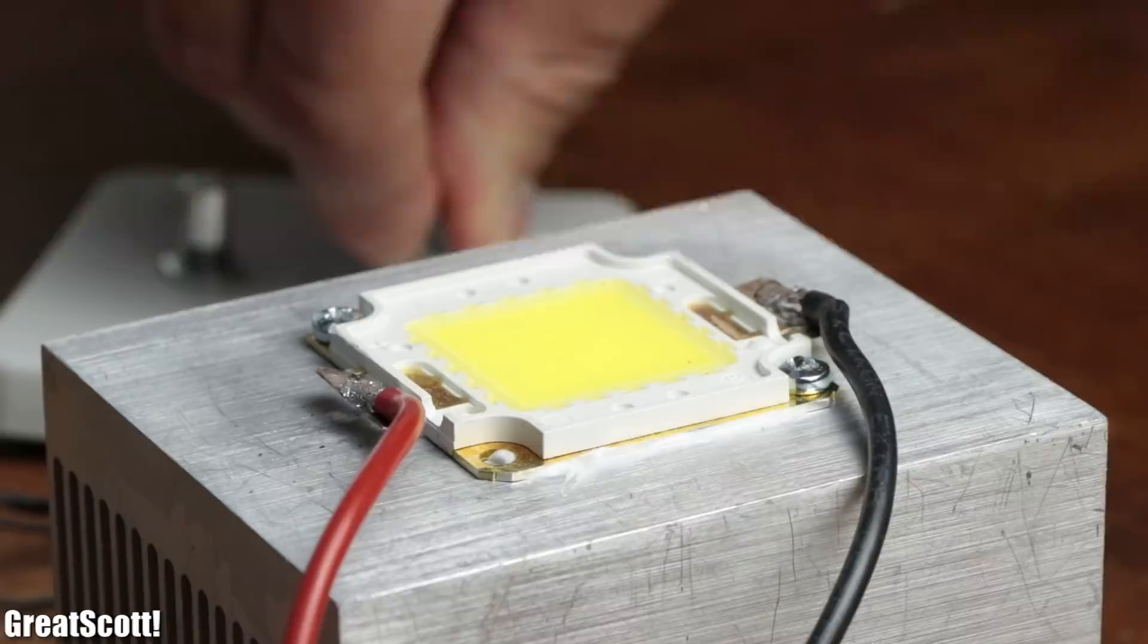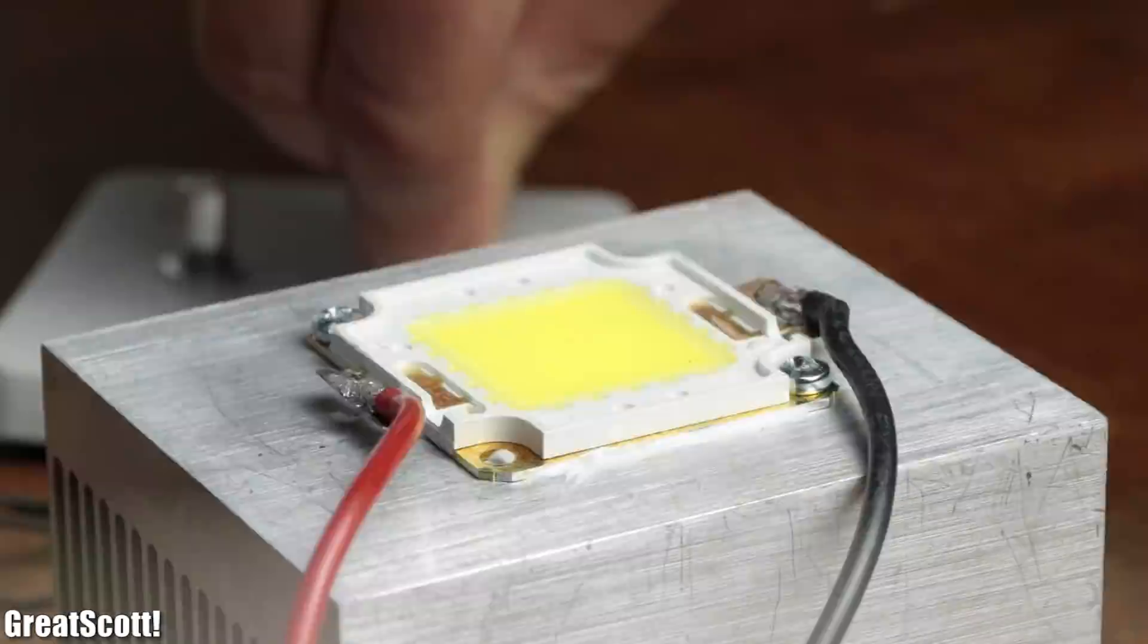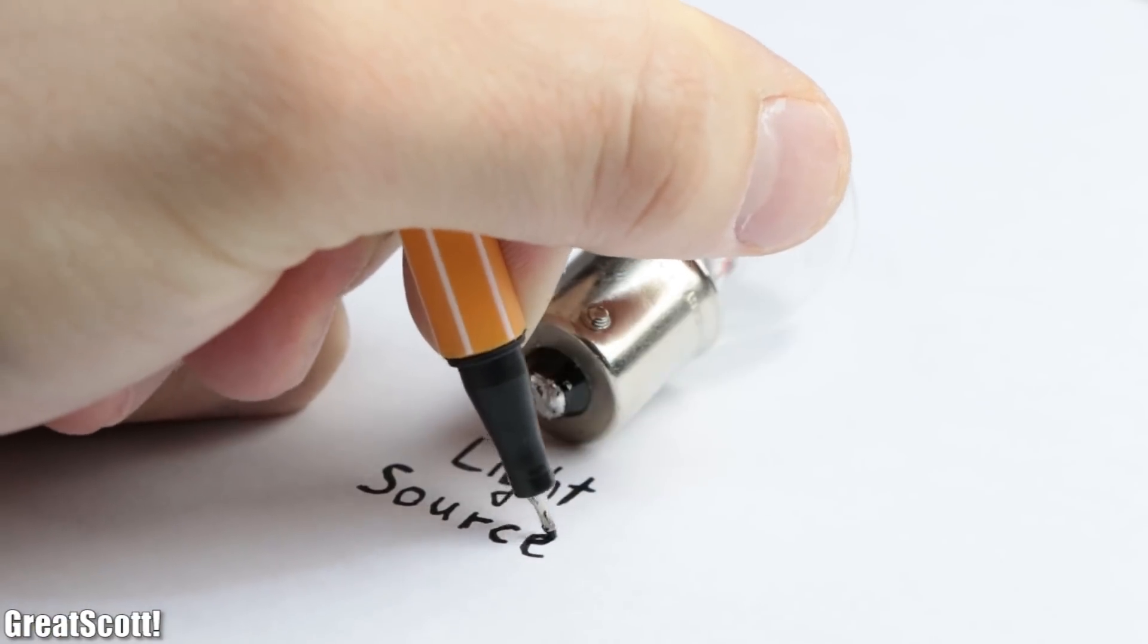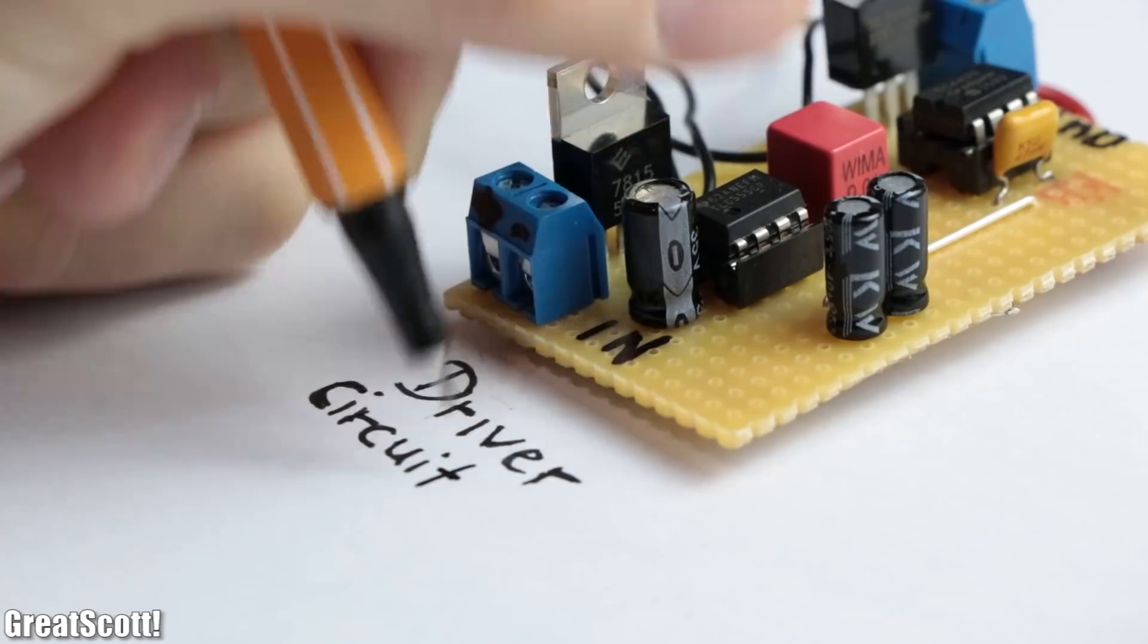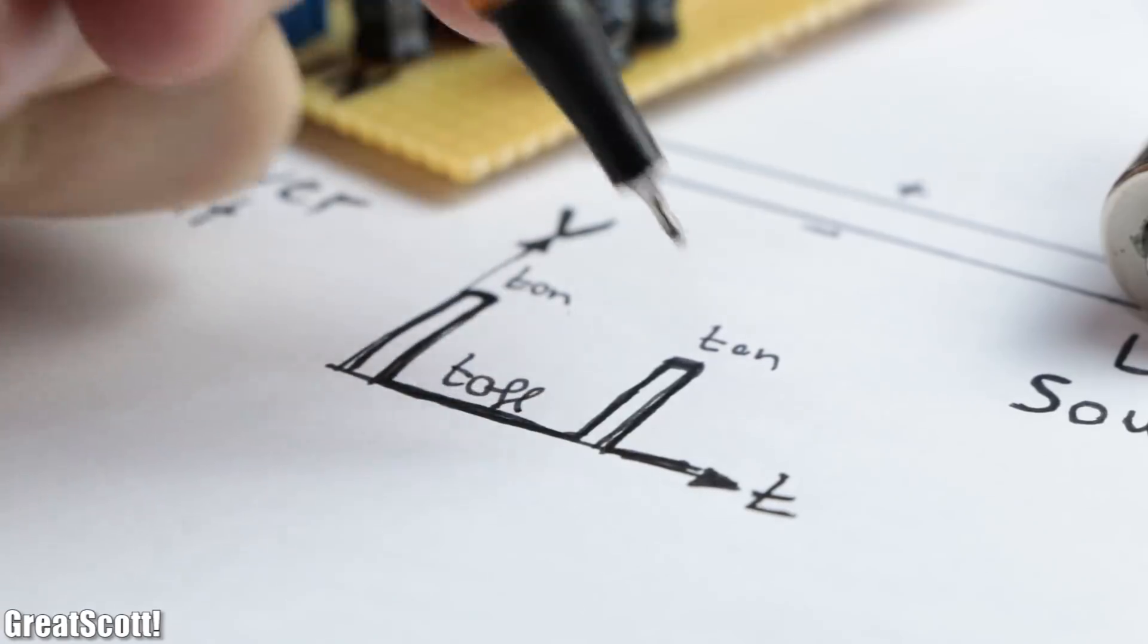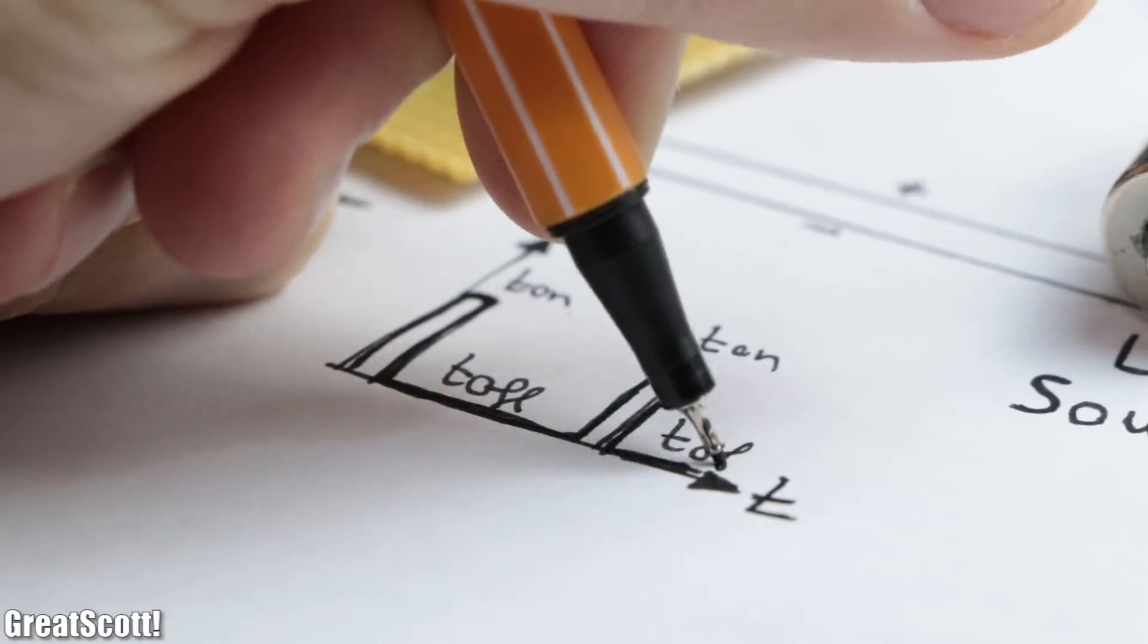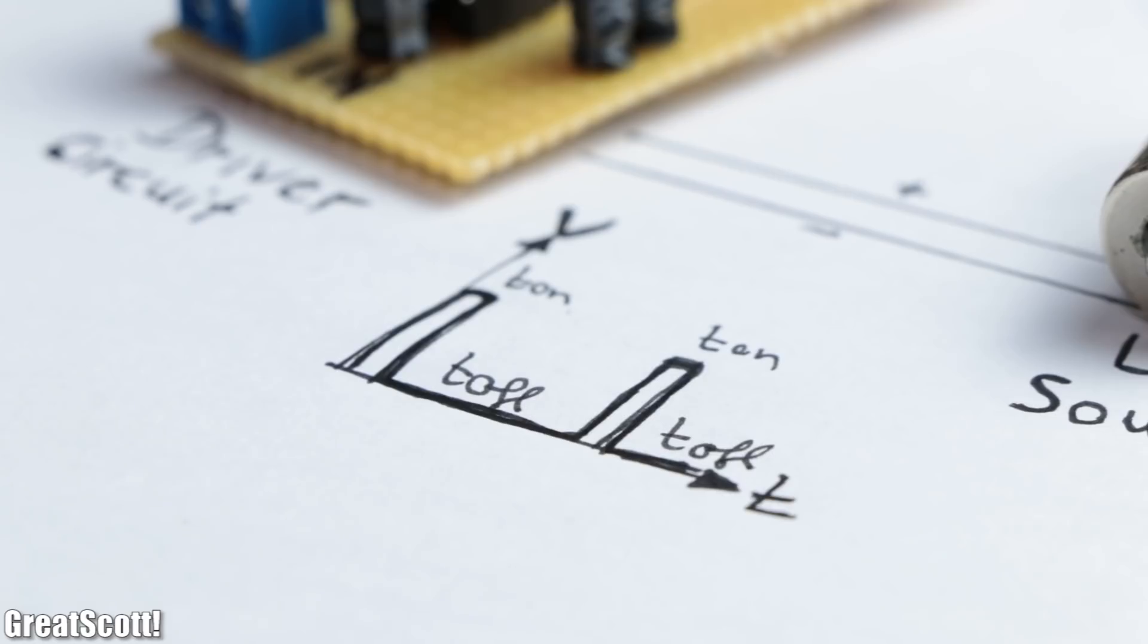First off, what exactly makes up a stroboscope? Well, in a nutshell, it consists of a light source and a driver circuit that periodically illuminates the light source for a very short amount of time. Due to those quick energy bursts or flashes, we create an optical illusion that makes objects look like they are moving in slow motion.